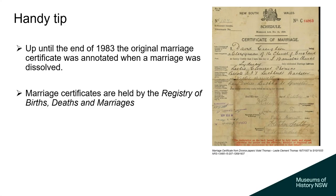If you're unsure if a divorce took place, marriage certificates up to 1983 were annotated when a marriage was dissolved — a handy tip to confirm whether a divorce took place. Please note that we don't hold marriage certificates at Museums of History New South Wales State Archives; you'll need to purchase these from Births, Deaths and Marriages.